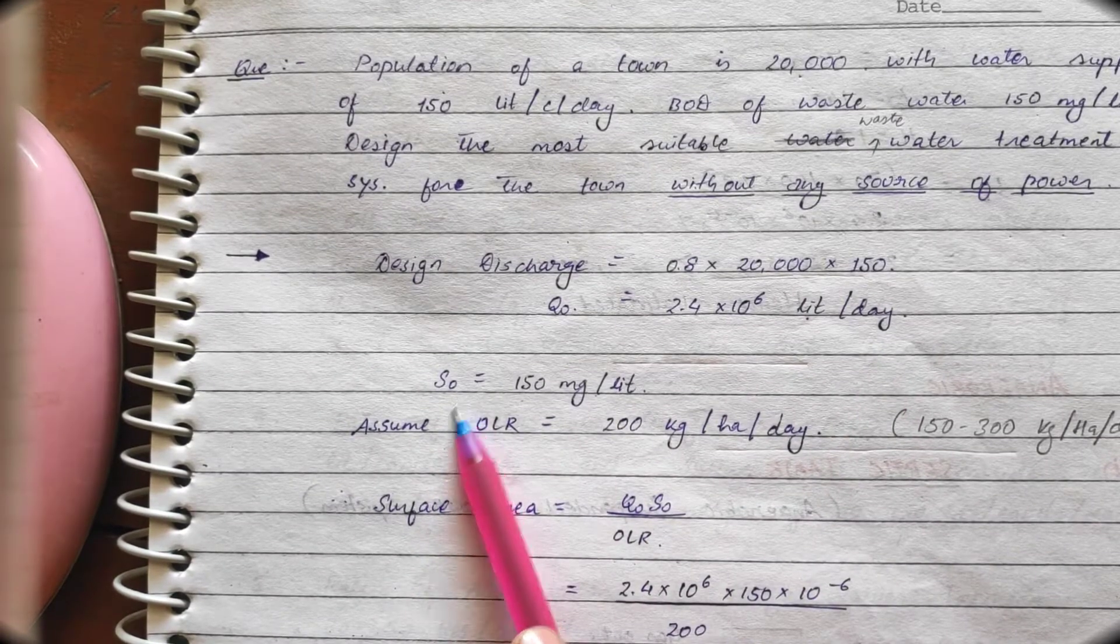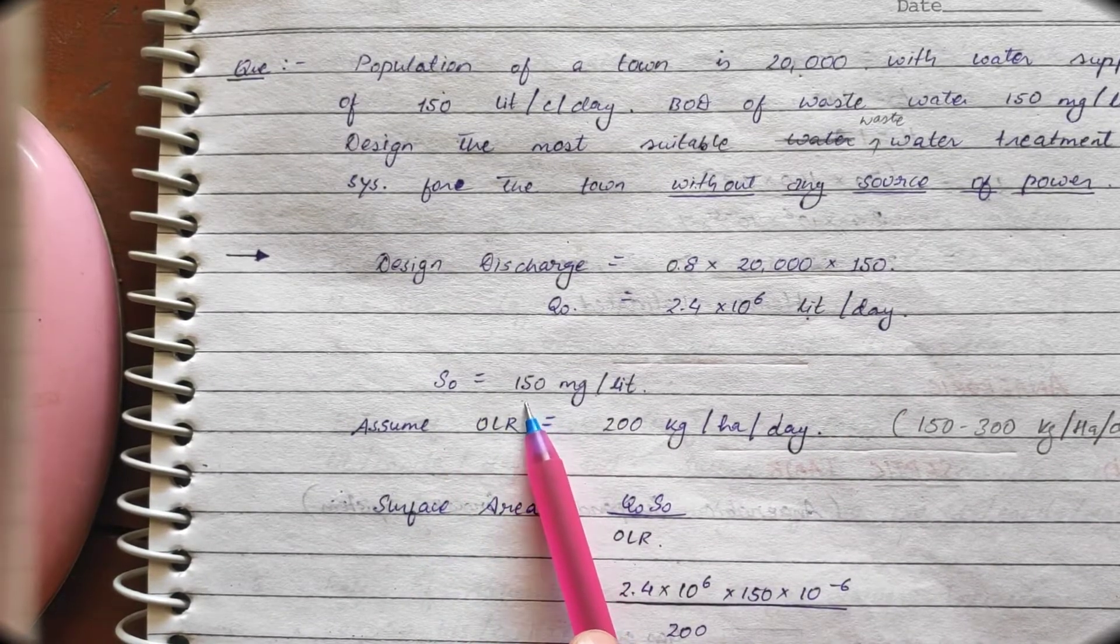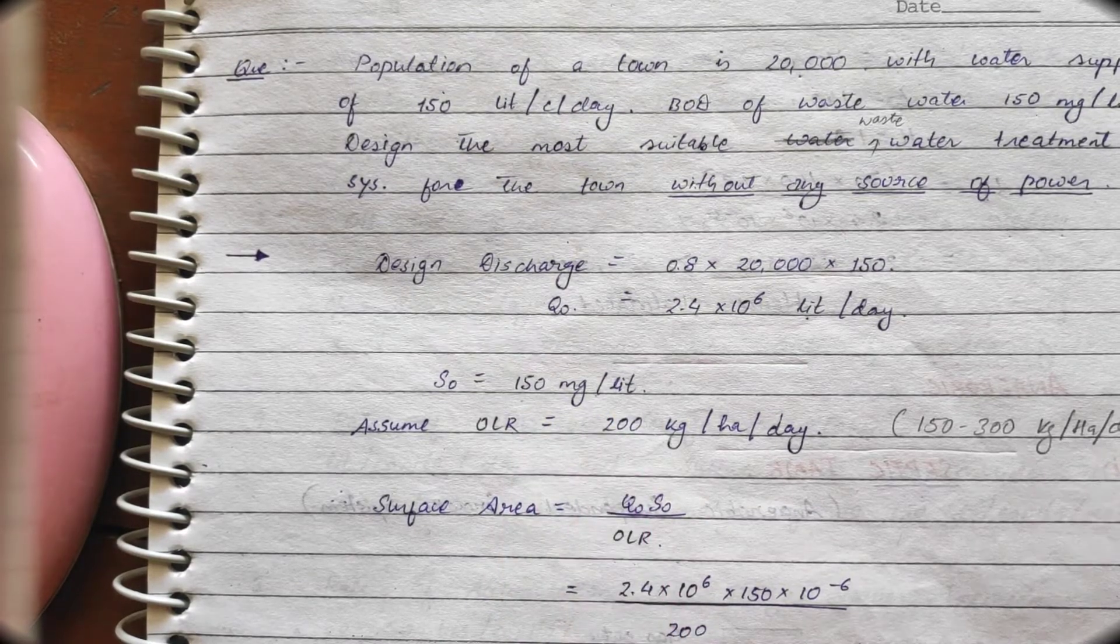Now, next given parameter is S0. S0 is what? BOD of wastewater. That is 150 mg per liter.